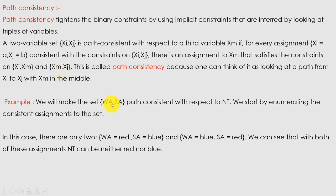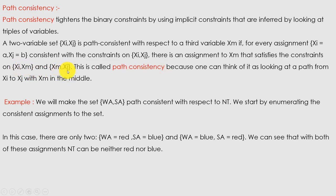We can make the set {WA, SA} path consistent with respect to NT using values from the map coloring problem. We start by enumerating the consistent assignments to the set: there are only two — WA = red and SA = blue, or WA = blue and SA = red. We can see that for both assignments, NT can be neither red nor blue. So the path constraint is applied in the same way between xi and xj with xm in the middle.